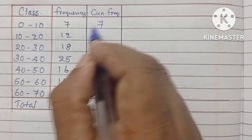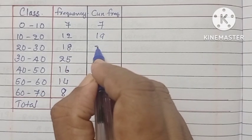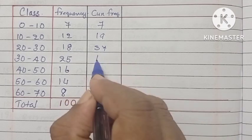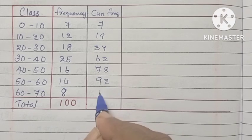We can find the cumulative frequency by adding 7 and 12, that is 19, and 19 and 18 is equal to 37, and so on. We will get the cumulative frequency up to 100.